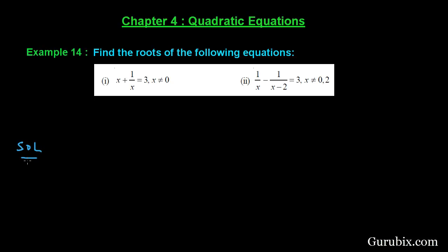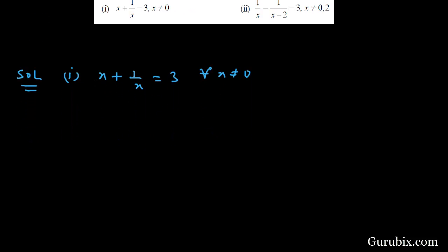Let us start with part 1. In part 1, we are given the equation x plus 1 over x equals to 3, for all x not equal to 0. Now we shall multiply both sides by x, giving us x squared plus 1 equals to 3x. This means x squared minus 3x plus 1 equals to 0.